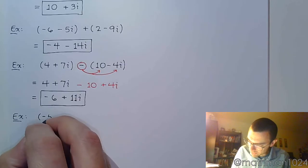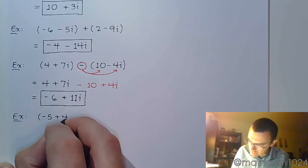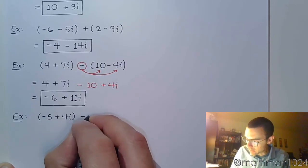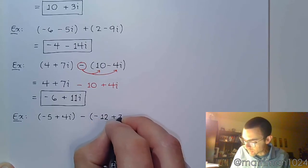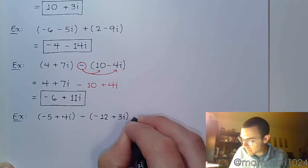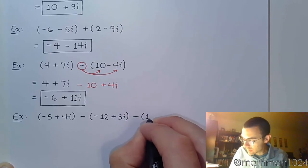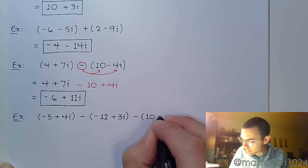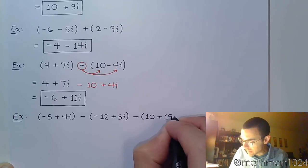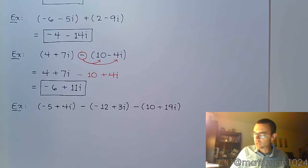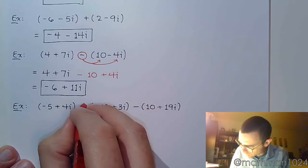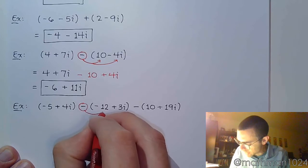All right, let's look at negative 5 plus 4i minus the quantity negative 12 plus 3i minus the quantity 10 plus 19i. All right, all right. So we see we have a couple of subtraction pieces going on here. So I'm going to use red here for the first one to distribute the negative.